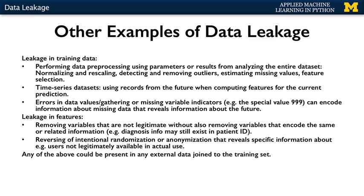In some cases, dataset records are intentionally randomized or certain fields anonymized that contain specific information about a user, such as their name, location, and so on. Depending on the prediction task, undoing this anonymization can reveal user or other sensitive information that is not legitimately available in actual use. Finally, any of the above examples could be present in a third-party dataset that gets joined to the training set as an additional source of features, so always be aware of the features in such external data and their interpretation and origin.